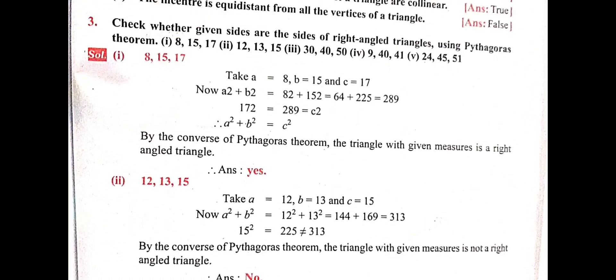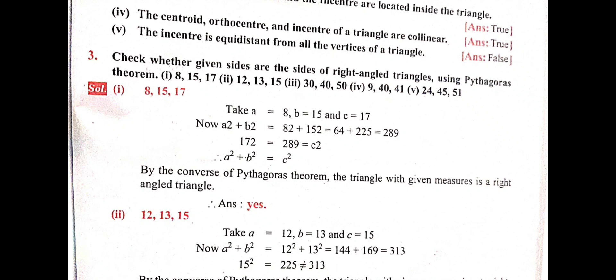Now we'll solve the sums. Question 3: check whether the given sides form a right-angle triangle. By Pythagoras theorem, the greatest side squared must equal the sum of squares of the other two. Take a = 8, b = 15, c = 17. Then a² + b² = 8² + 15² = 64 + 225 = 289.